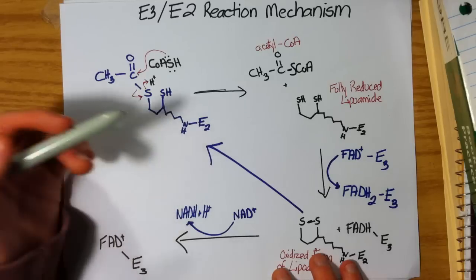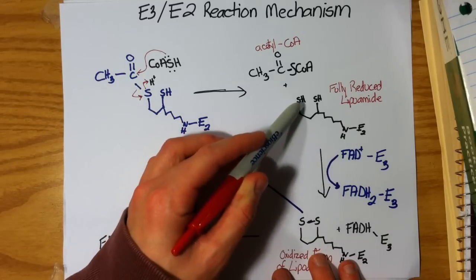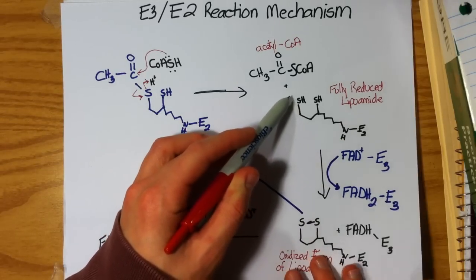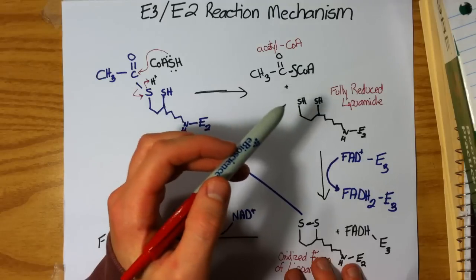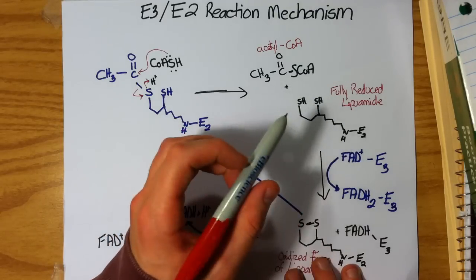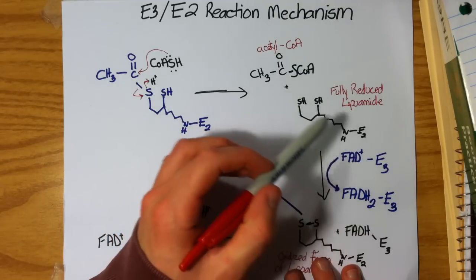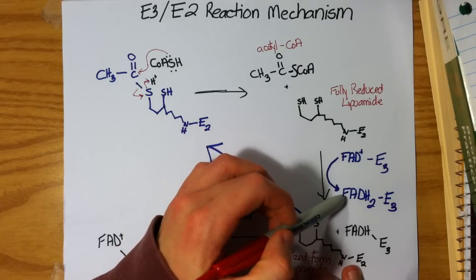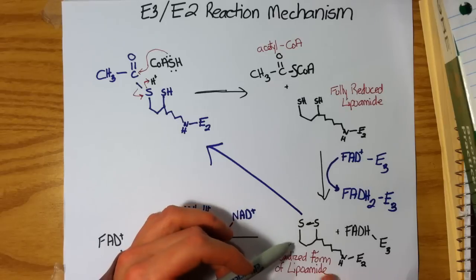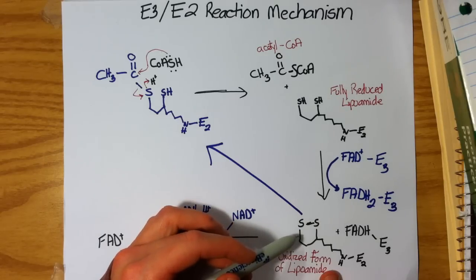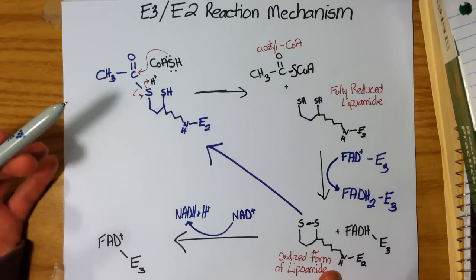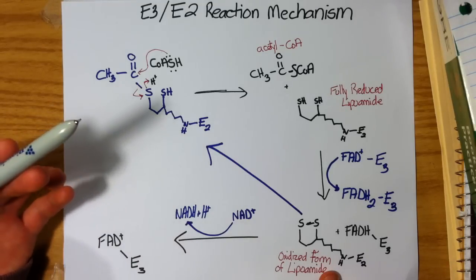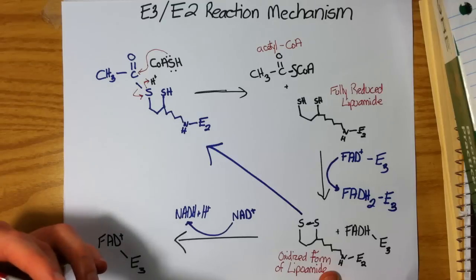And we do this by picking these electrons off using an electron carrier, and that's going to come from E3. E3 has FAD+ bound to it. It's going to pick up these electrons from the sulfurs, forming FADH2. So now we have reoxidized our lipoamide, and it can now react again with our TPP acetyl group from our E1 mechanism.